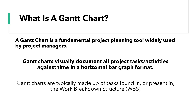So first and foremost, what is a Gantt chart? Well a Gantt chart is a fundamental project planning tool that is widely used by project managers. They enable us to visually document all project tasks and activities against time and they are usually created on a horizontal bar graph format. Gantt charts are typically made up of tasks found in the work breakdown structure, or WBS.